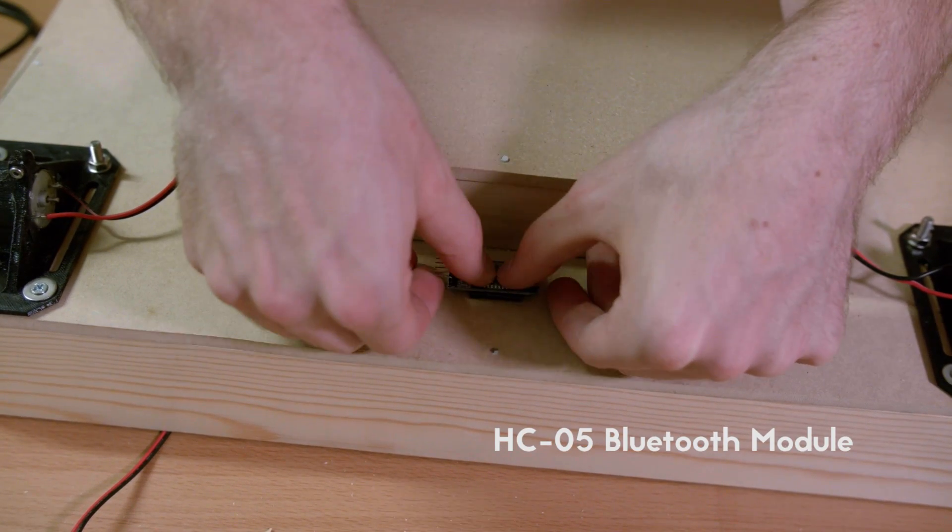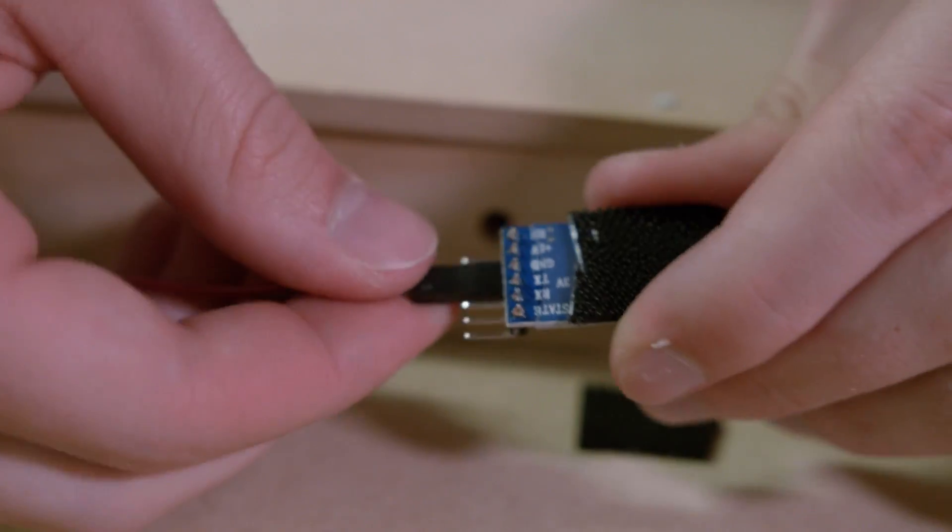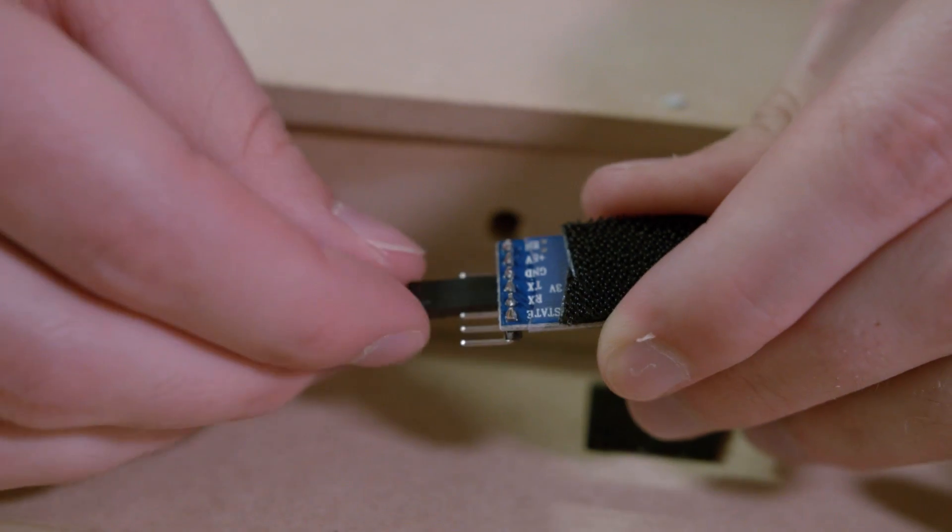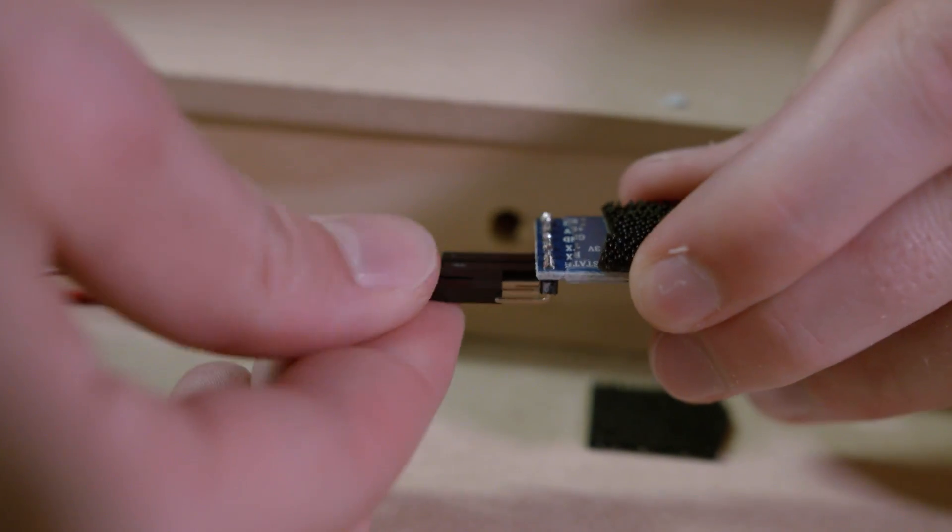This is the HC-05 Bluetooth module. There are two data pins that you have to wire up to the Arduino and then two pins for power and ground. This module is just driven by 5 volts like most other components.